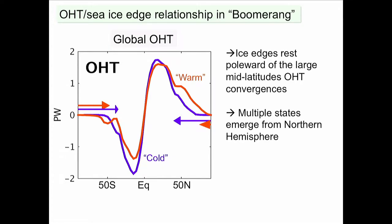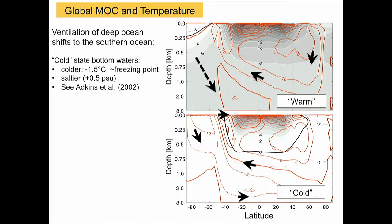If you look at the southern hemisphere, it doesn't change much between the two states. So we think the multiple states in that case are emerging from the northern hemisphere. That's quite interesting because compared to the previous case where we had symmetry between the two hemispheres, we now have a system which is not symmetric between them — and not zonally symmetric either — and yet we still get multiple states.